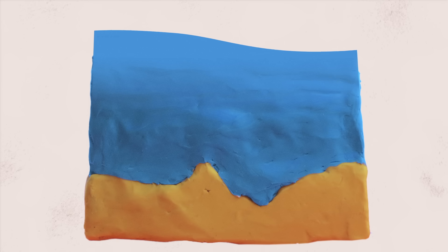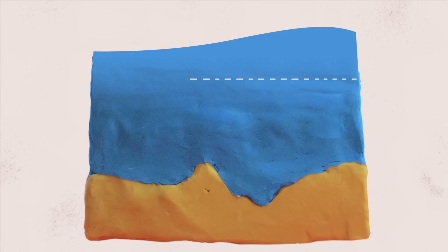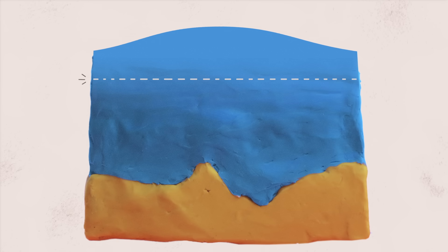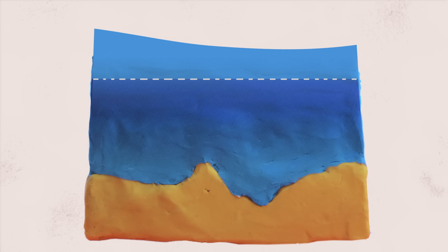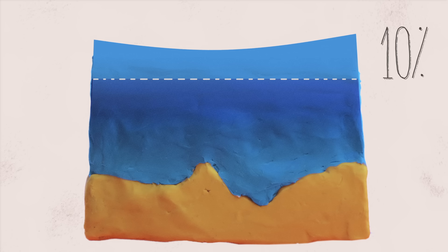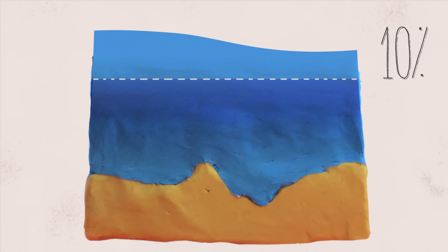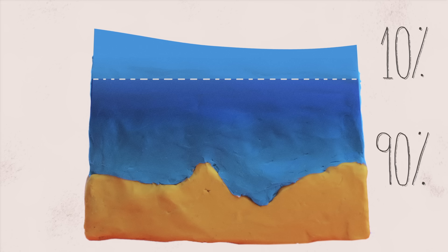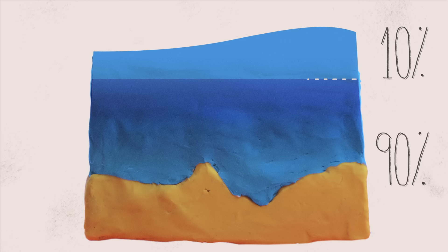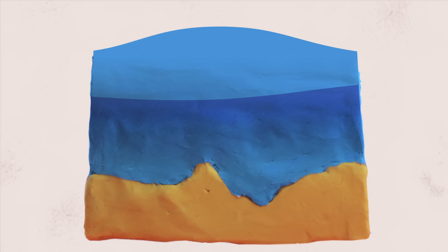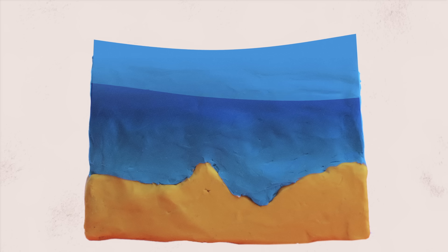Ocean currents fall into two main categories — surface currents and deep ocean currents. Surface currents control the motion of the top 10% of the ocean's water, while deep ocean currents mobilize the other 90%. Though they have different causes, surface and deep ocean currents influence each other in an intricate dance that keeps the entire ocean moving.